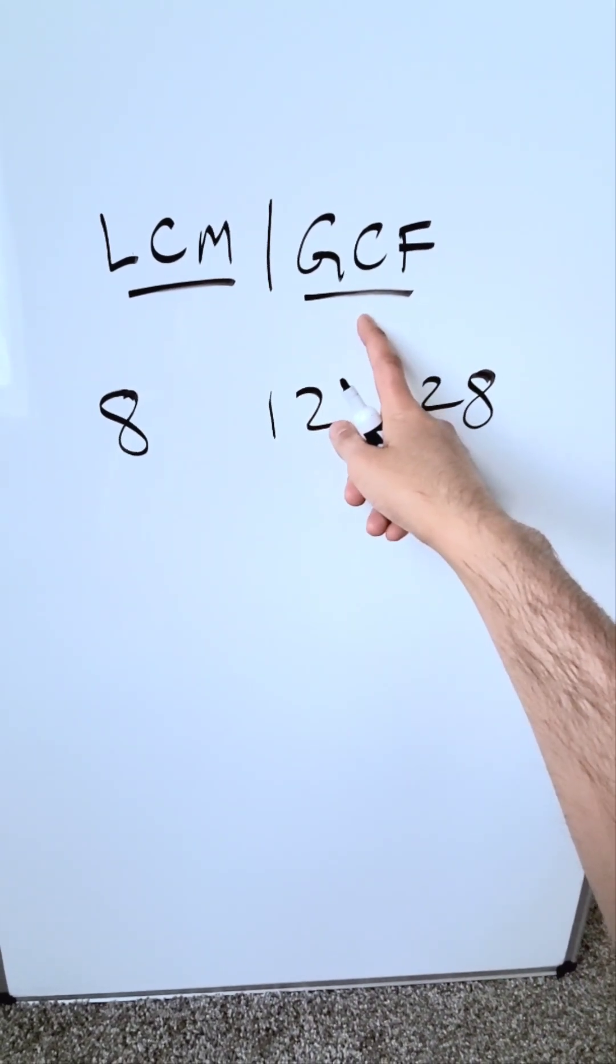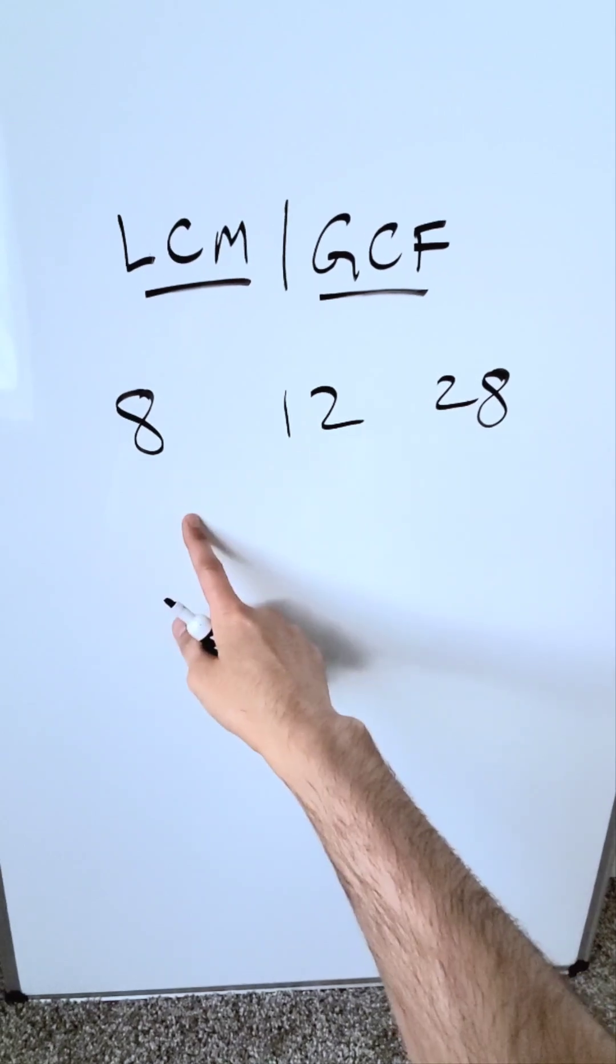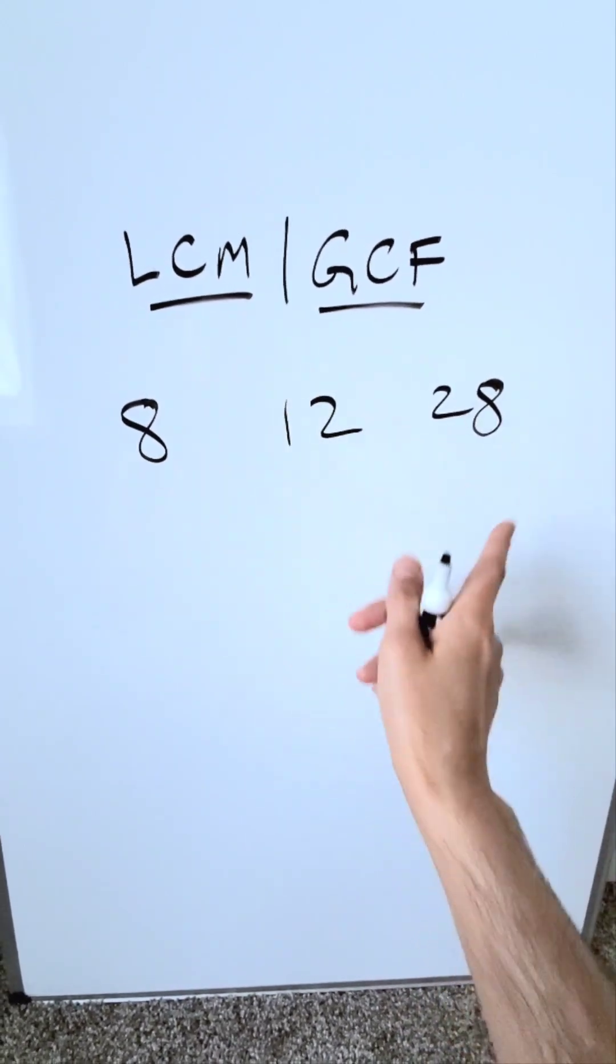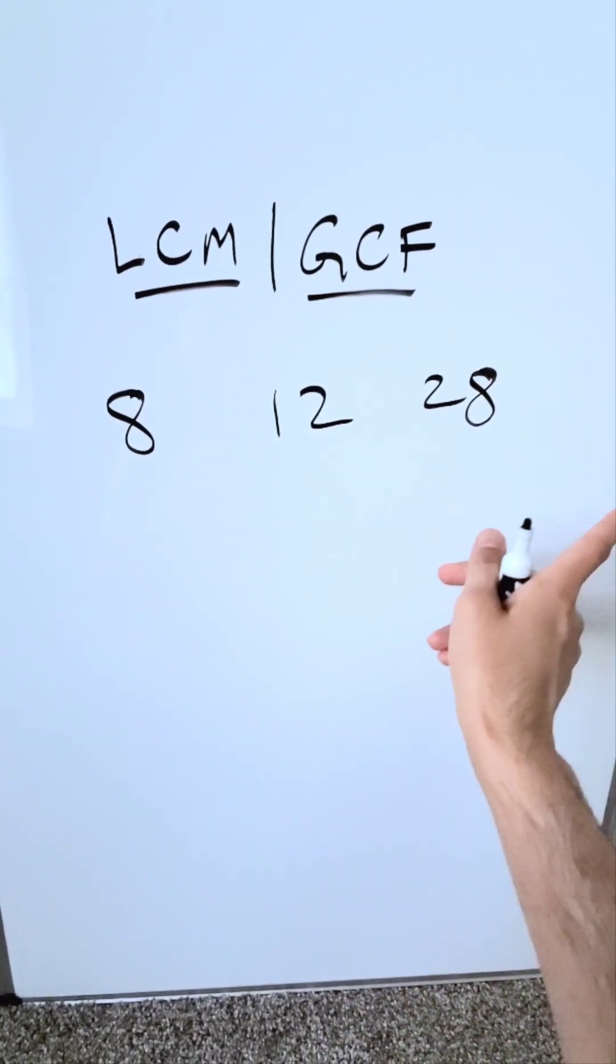Greatest common factor: the largest number which will go into all of these. Lowest common multiple: another number for which these are multiples of that.